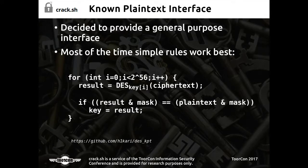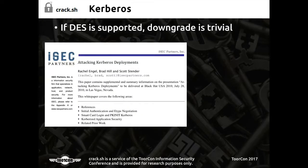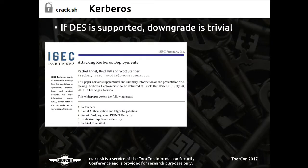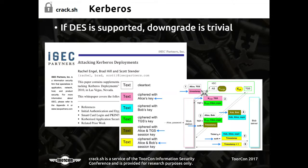The general purpose interface works based on simple rules with masks — you provide the information you know about what's happening, it goes through all possible DES keys and sends you a list of all matches. To demonstrate this, we tried using Kerberos as an example. Does anybody use Kerberos in their environment? Has anybody seen DES used in the wild — DES-CBC or RC4? Some people are still using DES; I know my day job still uses DES on our network.